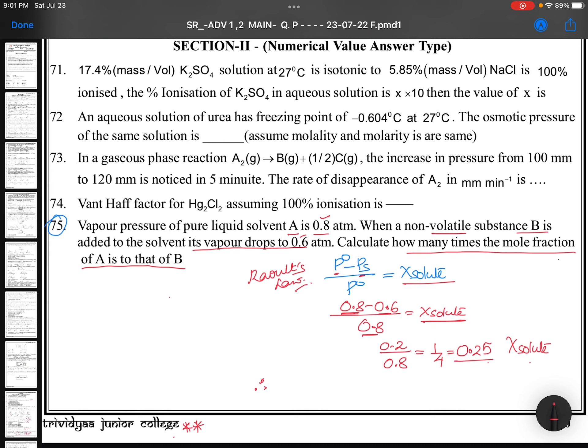That is 1/4, so mole fraction of solute is 0.25. Then mole fraction of solvent will be 0.75. As you know, the sum of mole fractions equals 1, so mole fraction of solvent means A.